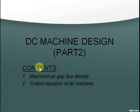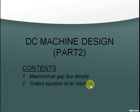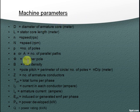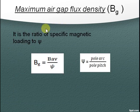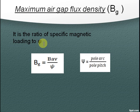Maximum air gap flux density. 2. Output equation of DC machine. I have put the list of machine parameters here before starting our lecture. If you have any doubt regarding parameters you can check it on this page. Maximum air gap flux density Bg is the ratio of specific magnetic loading to psi, and psi is equal to pole arc by pole pitch.